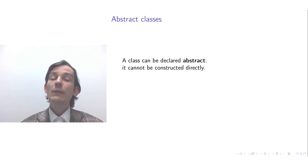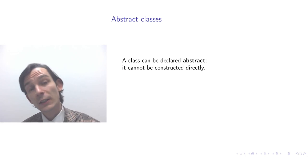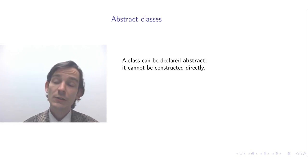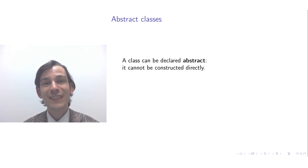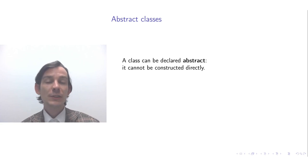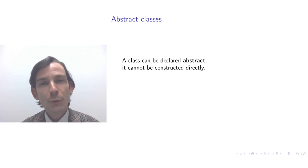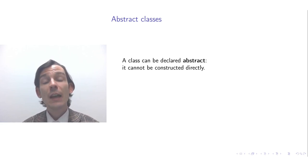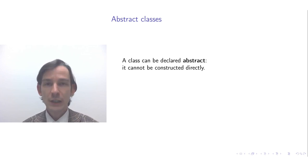In the previous video you have seen class declarations. A class consists of field declarations and method declarations, and you can understand the class as representing the possible objects that are instances of that class, possessing every one of its declared fields and on which you can call the methods it declares. Now it is also possible for a class to be declared abstract, which means you cannot directly construct objects of such abstract classes.